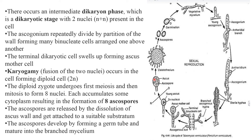The diploid zygote undergoes first meiosis and then mitosis to form 8 nuclei, each accumulating some cytoplasm, resulting in the formation of 8 ascospores. The ascospores are released by the dissolution of the ascus wall and attach to a suitable substratum. The ascospores develop by forming a germ tube and mature into a branched mycelium. This is the life cycle of Penicillium through sexual reproduction.